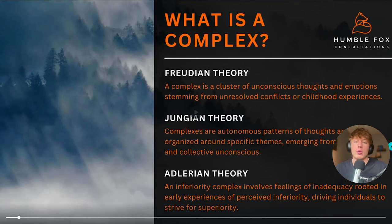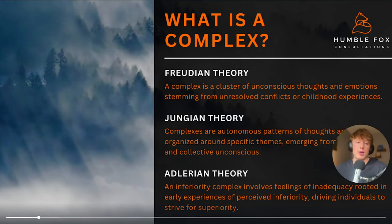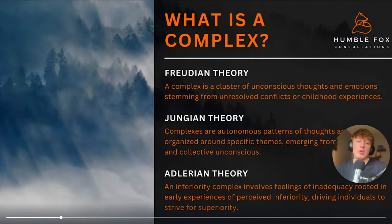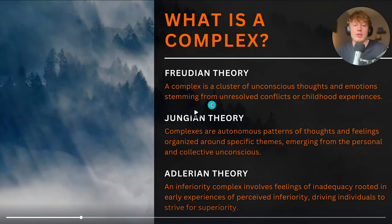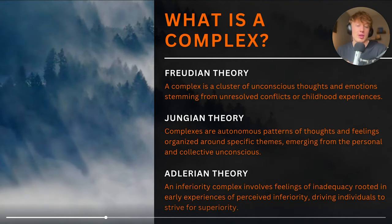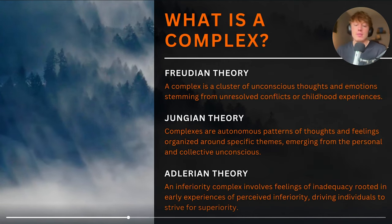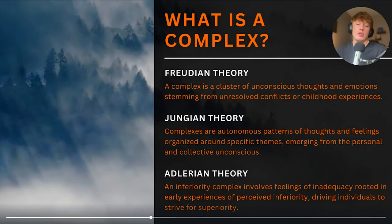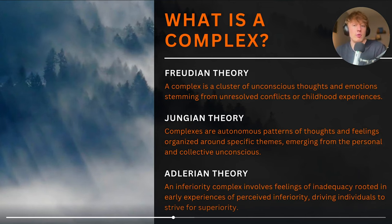There are a couple of different theories — three main theories that developed in the early 1900s. In Freudian theory, a complex is a cluster of unconscious thoughts and emotions stemming from unresolved conflicts or childhood experiences. In Jungian theory, complexes are autonomous patterns of thoughts and feelings organized around specific themes emerging from the personal and collective unconscious. Then there's Adlerian theory, which introduced the idea of the inferiority complex — the notion that in early childhood we had feelings of inferiority in certain areas, and the rest of our life is basically an attempt to overcompensate for those feelings.